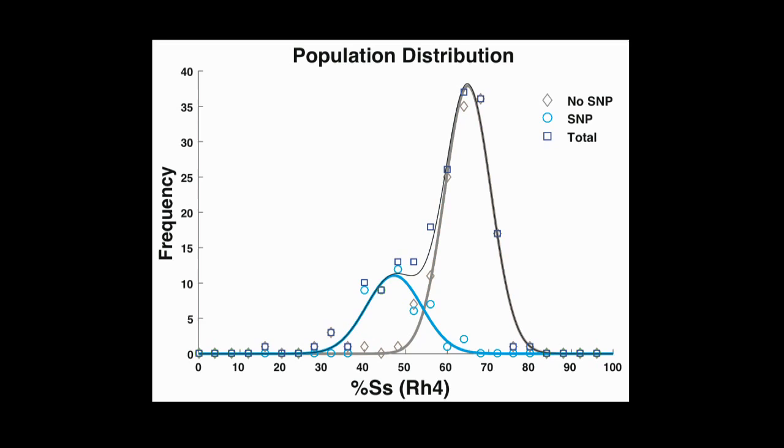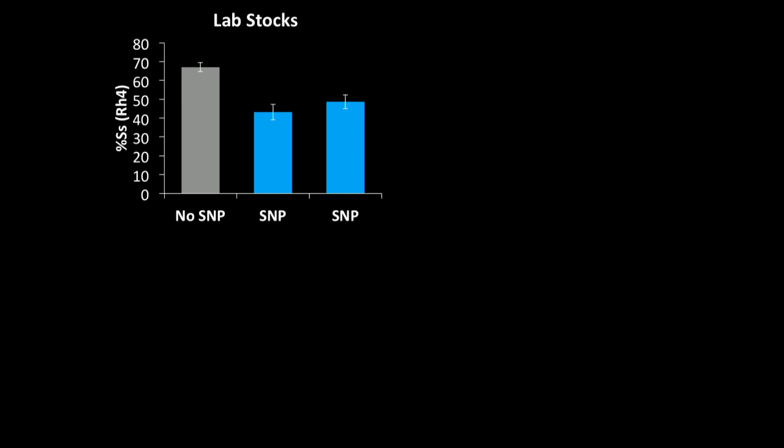So just to show you that data in a different way, I think you can really appreciate from this graph that there are two distinct populations, a population with the SNP that has a lower spineless expression frequency than the population without the SNP represented in gray.